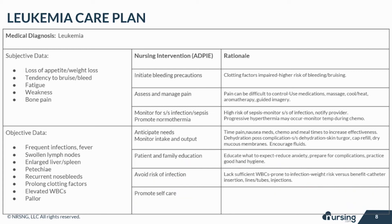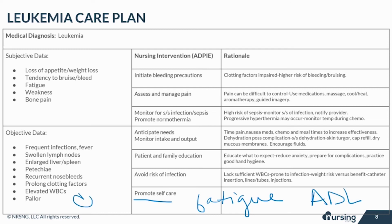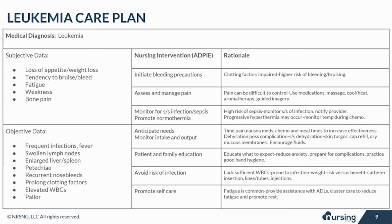With leukemia patients, fatigue is a very common symptom which may make it difficult for the patient to participate in self-care. Provide assistance with ADLs as needed and cluster care to reduce fatigue and promote rest. Prioritize activities to help conserve their energy for self-care. Here is a look at the completed care plan for leukemia.